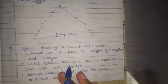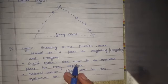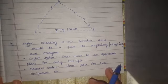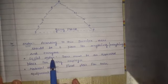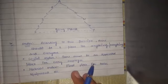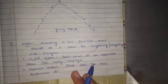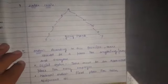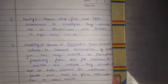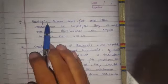The tenth principle is Order. According to this principle, everything and every person should be in a particular place. There are two types of order: Social Order, which means every person should be at their appointed place (like a cabin assigned to them); and Material Order, which means tools and equipment should be at their fixed place. Following the order principle eliminates unproductive movements and saves time.